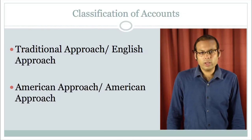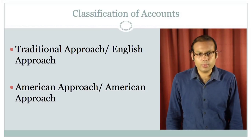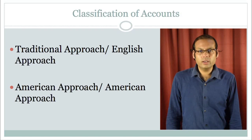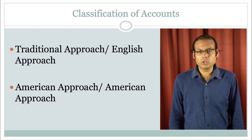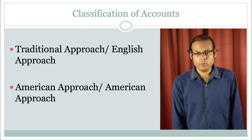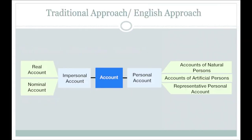Now let us discuss the classification of accounts. When we discuss this particular aspect, we can follow two approaches: number one, the traditional approach, also known as the English approach; and number two, the American approach, also known as the modern approach. Under the traditional approach, we generally classify the accounts as personal account and impersonal account.